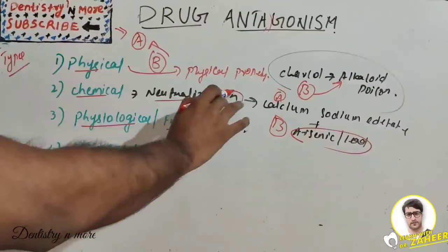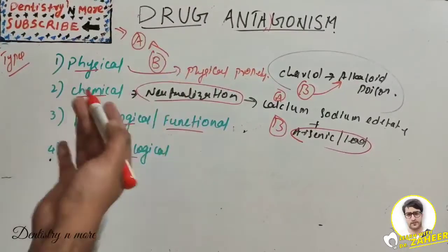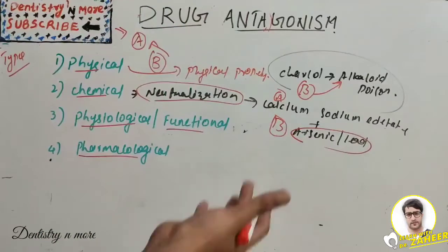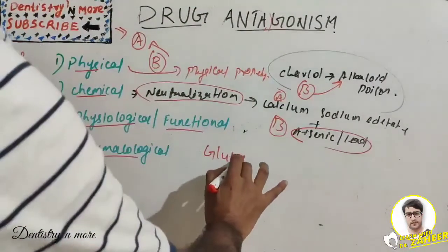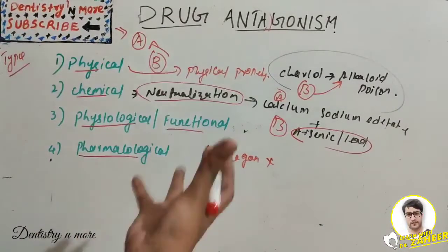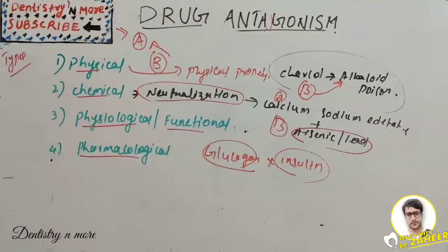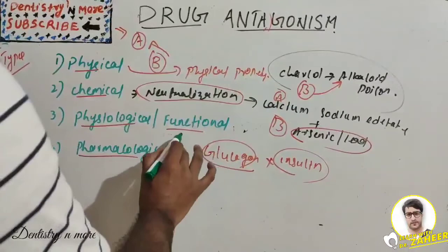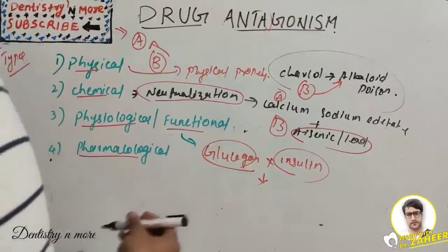Functional antagonism, also called physiological antagonism, involves two drugs with opposing effects. Just like the pancreas has alpha and beta cells producing glucagon and insulin: glucagon increases blood glucose while insulin decreases it. These opposing actions maintain blood glucose levels. This is functional antagonism — glucagon and insulin are a classic example.